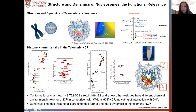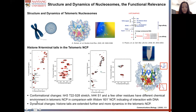We therefore went ahead to look at the telomeric NCP under conditions closer to physiological. The first set of experiments was to look at the histone tails in the telomeric NCP. Comparing to the 601 NCP, we do observe conformational changes in the histone H3 and H4 tails; however, those conformational changes are quite small. We also observed that the histone tails tend to be more dynamic in the telomeric NCP.